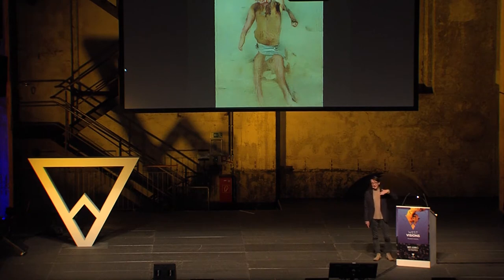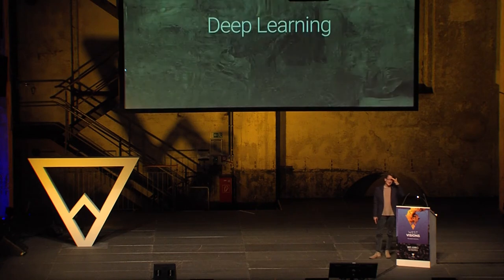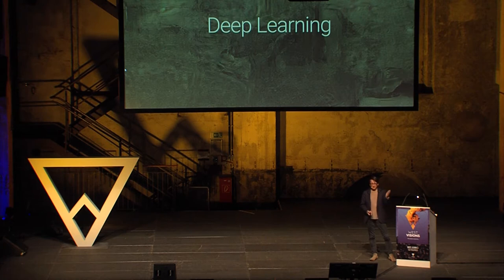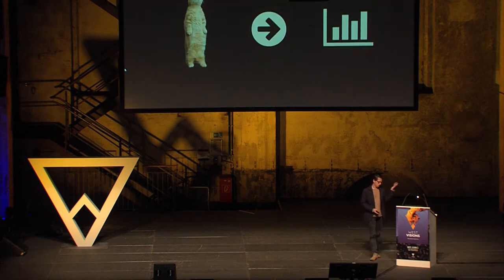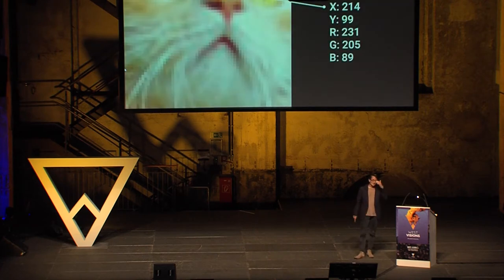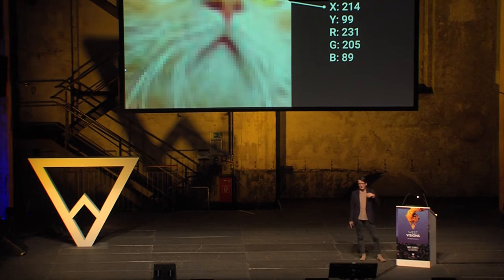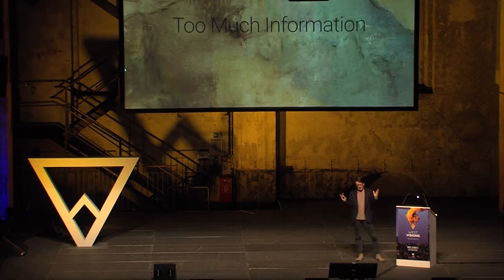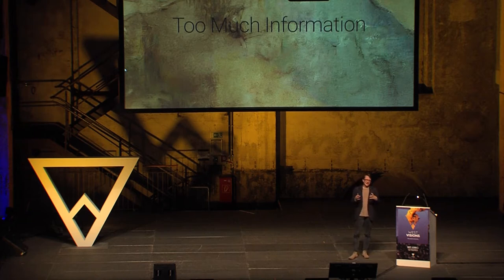We have to start at the beginning, and that is deep learning, because that is kind of what it all starts with. Deep learning was principally made to turn cats into data — or more precisely, images of cats into data. If you look at an image of a cat, it is already data. Every pixel is already an RGB value with a coordinate, but the problem is it's way too much information. What neural networks do is kind of let the air out of an image and reduce it to the meaningful stuff.